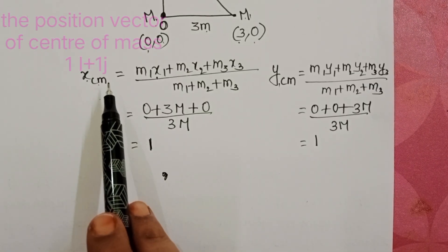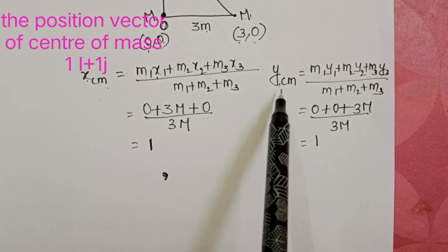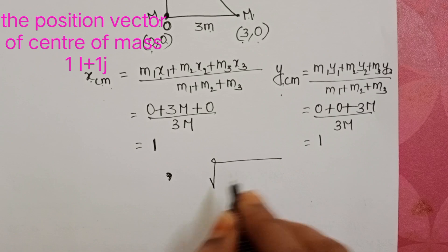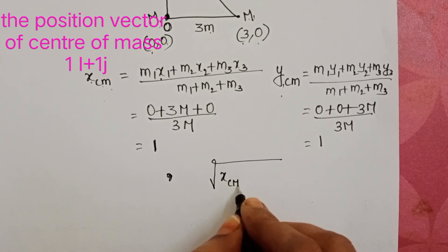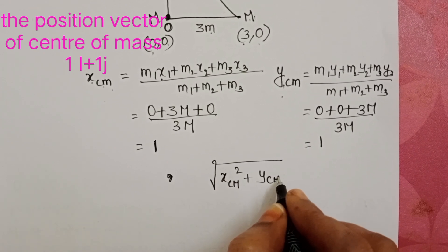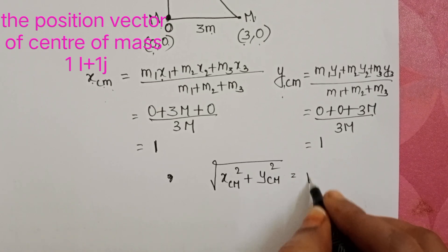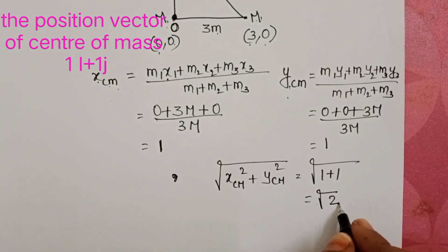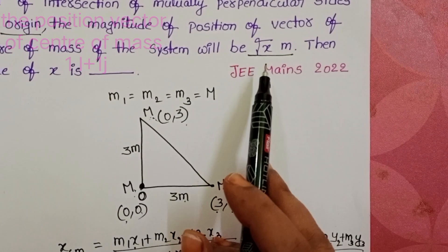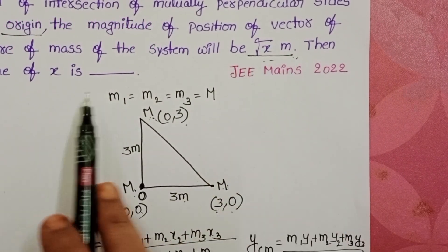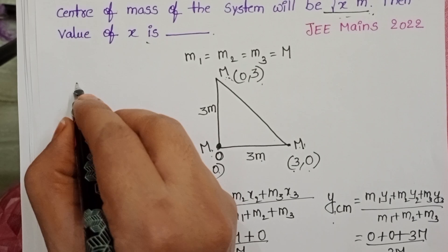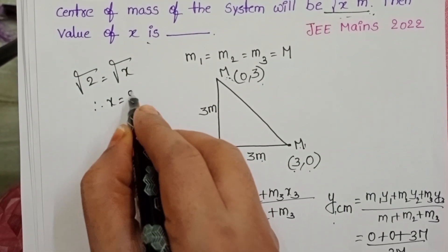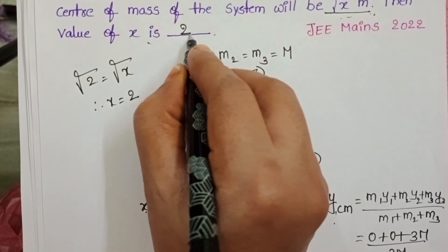Here we know the position of center of mass along x direction and y direction. Now we want the magnitude: square root of x_cm square plus y_cm square. Square root of 1 plus 1 equals square root of 2. Center of mass of the system will be square root of x meters. We want the value of x. Square root of 2 equals square root of x. Therefore x equals 2. Answer is 2.